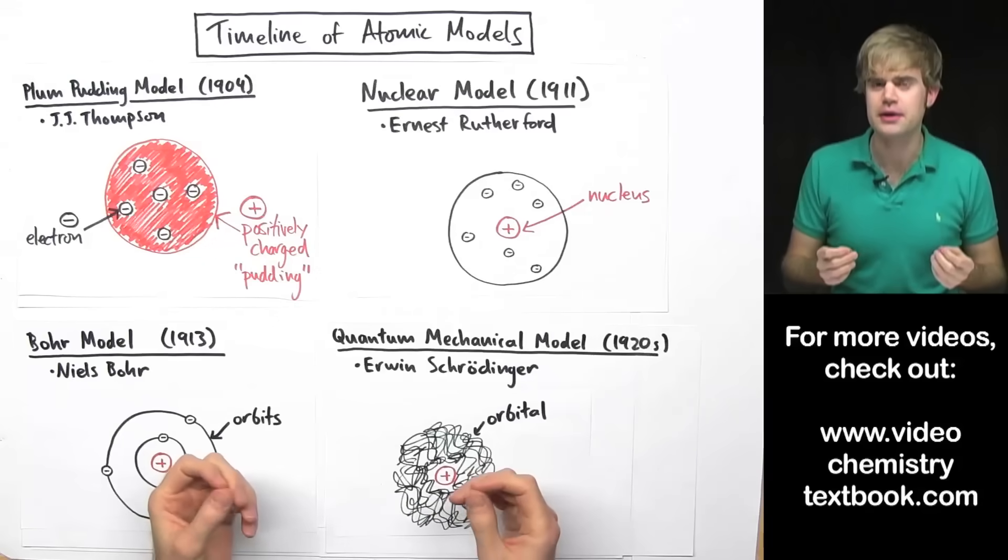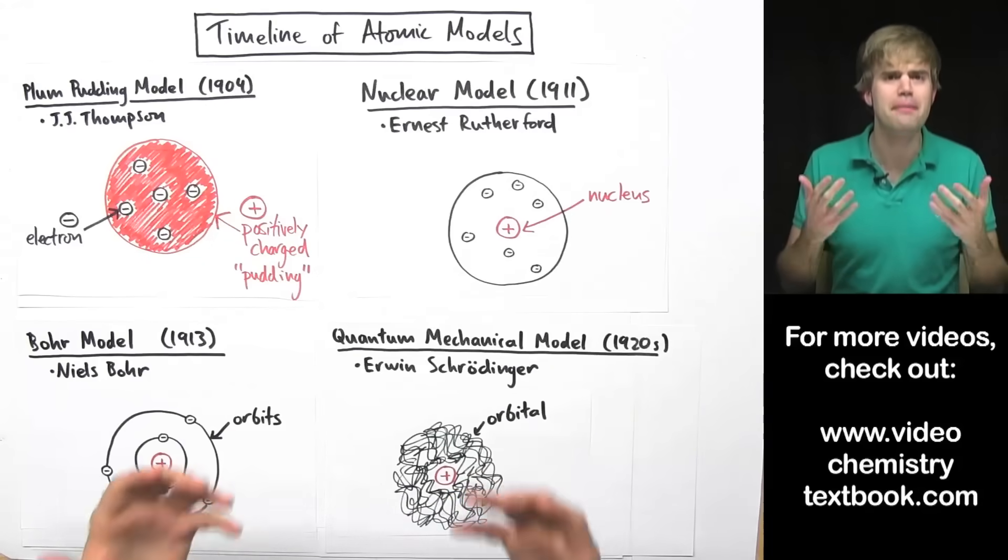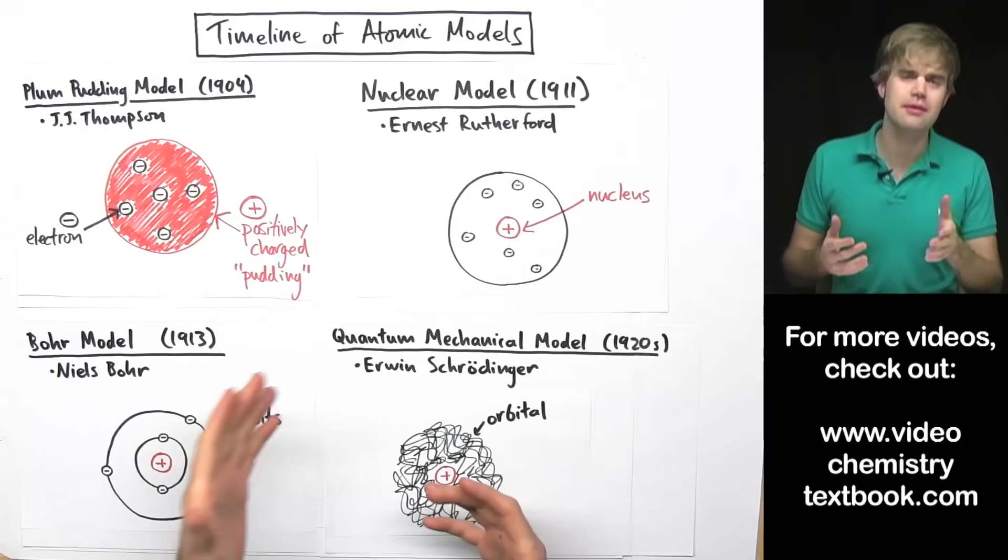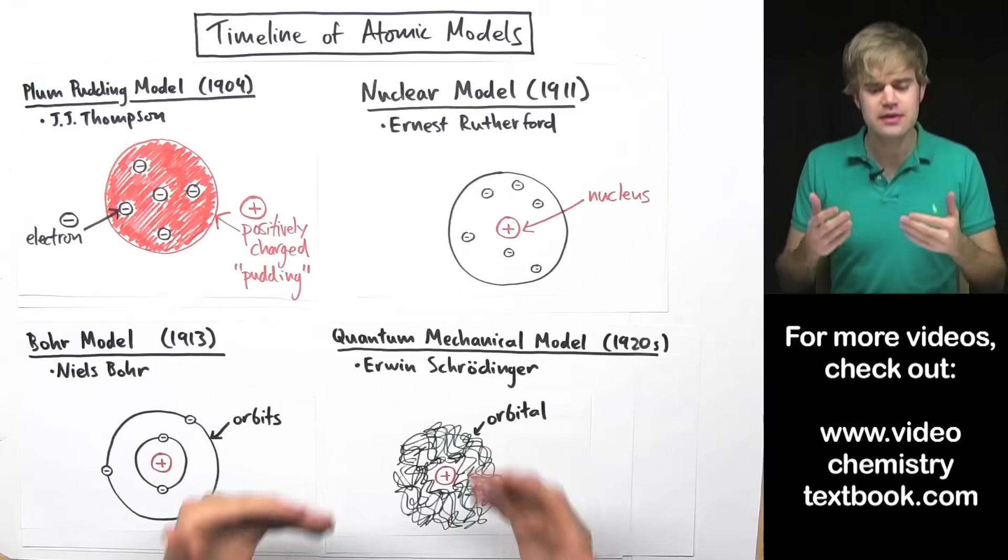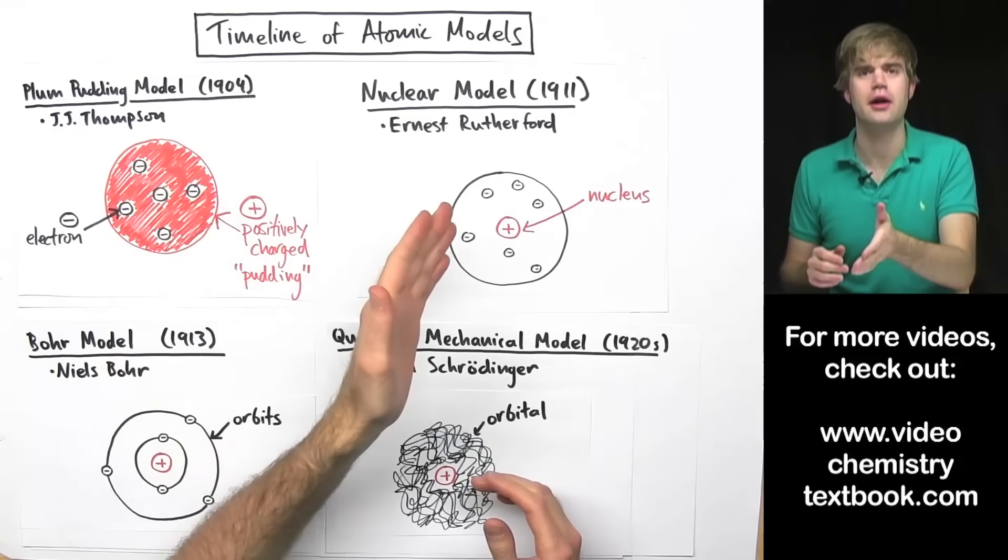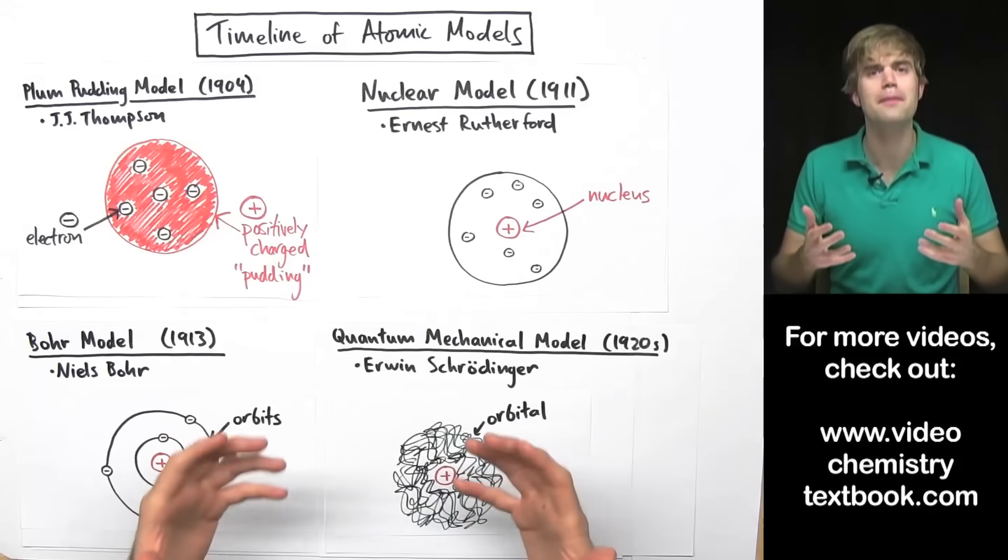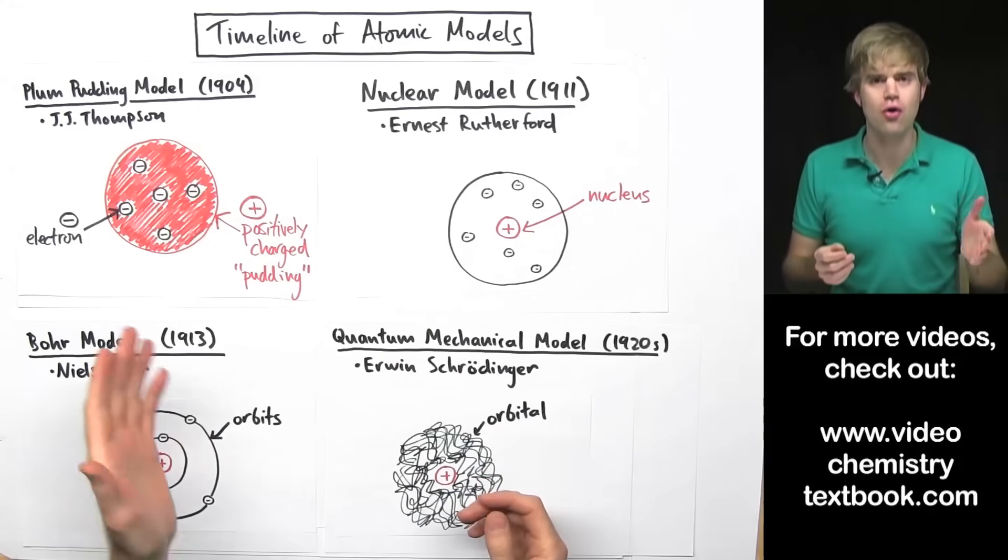As scientists have done experiments and learned more about atoms, they've changed the way they think about atoms. So in this video we're going to look at a timeline of the different ways that scientists have pictured or imagined atoms over the years.